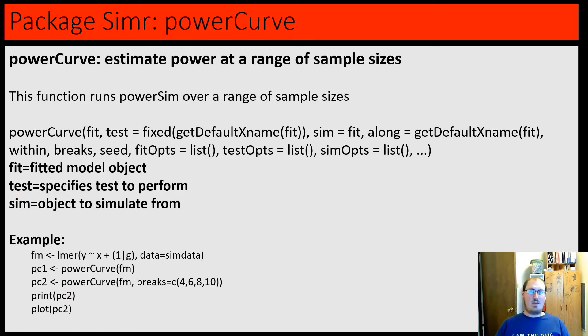Finally, powerCurve is a powerSim essentially on a larger scale. It runs powerSim over a range of sample sizes. The fit, test, and sim are the same as powerSim. While there are more options to do here, one is also the number of breaks. We'll talk about that in a second. So, we might have an example here. Our generic model from before. We can run powerCurve just by entering the model. See here. And I think it defaults to trying 10 different sample sizes within whatever the range is. Or you can actually set your own breaks. So, maybe I just want to do four different sample sizes of 4, 6, 8, and 10. You can do that as well.